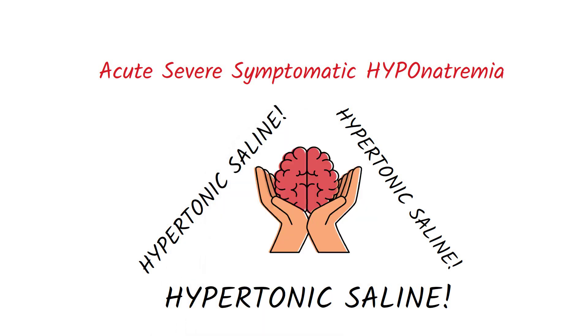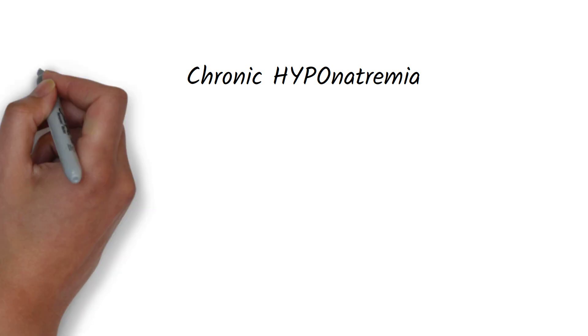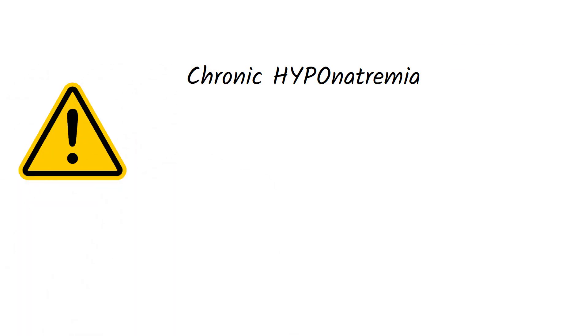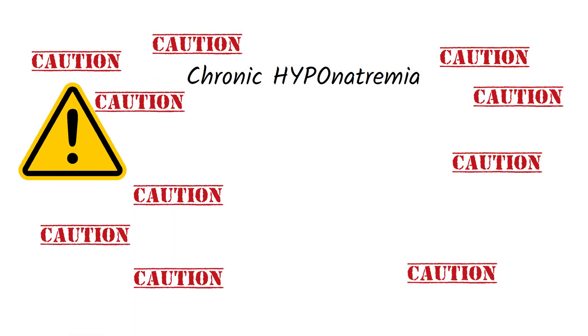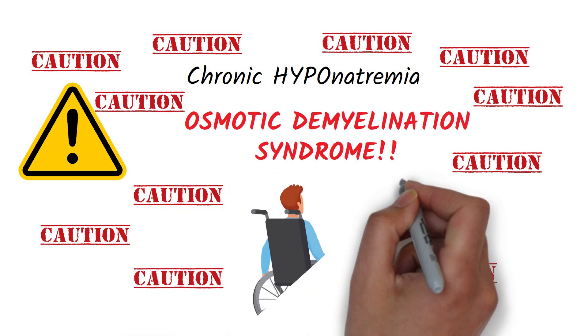However, for patients with chronic hyponatremia, you should be careful when using hypertonic saline to correct sodium levels, as rapid correction can lead to osmotic demyelination syndrome, which can cause coma and paralysis of all four limbs.